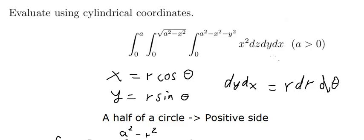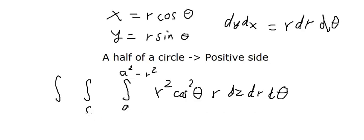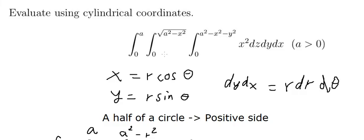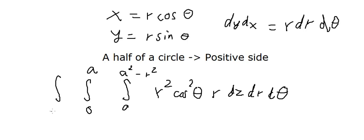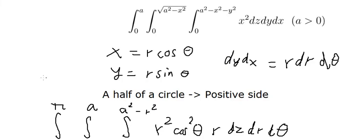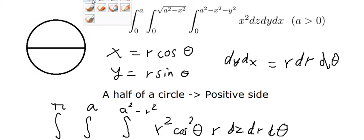For R, that's from zero to A. Because this is a half of the circle, we start from zero to π. We start from zero and go a half of the circle to π.